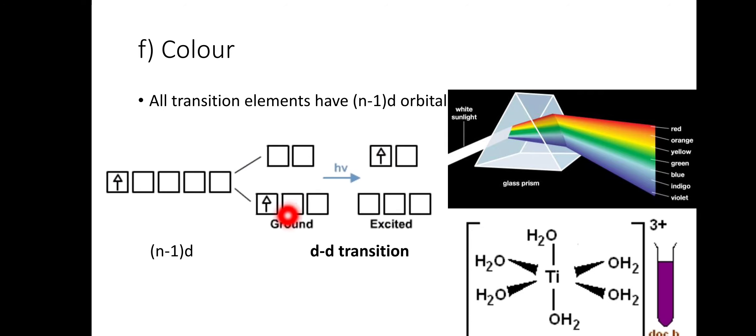The electrons residing in lower energy d orbitals absorb a part of the visible light and jump to the high energy d orbitals. This process is called d-d transition - d-d orbital transition.